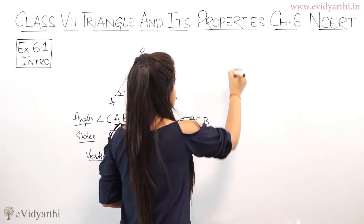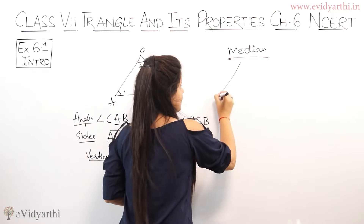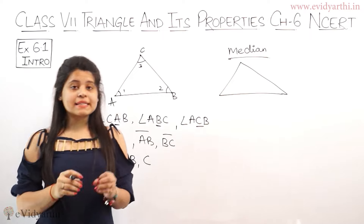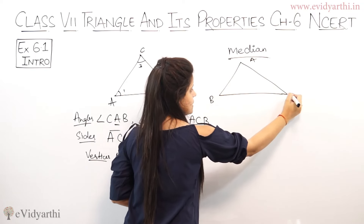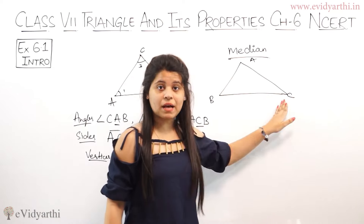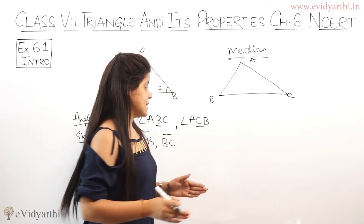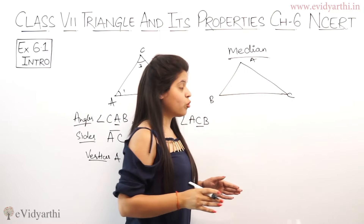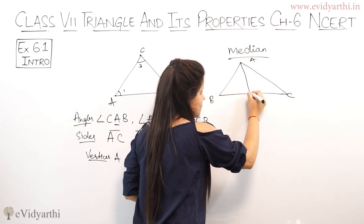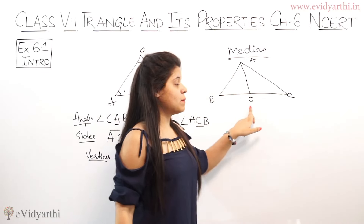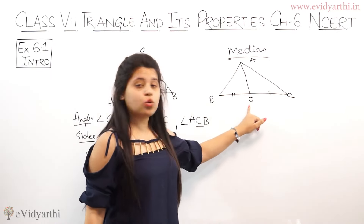Next comes the median. What is a median in a triangle? Again I'll take this triangle and name it A, B, C. The median passes from a vertex and cuts the opposite side at its midpoint. So if I look from A and draw a line segment to the opposite side BC, this line segment will cut BC at the middle point, meaning both halves will be equal.